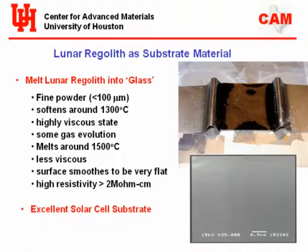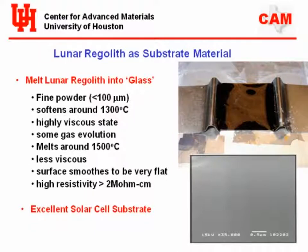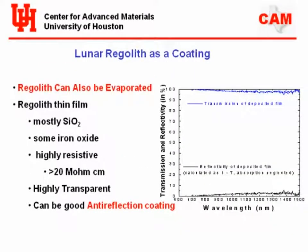We melted lunar regolith simulant JSC-1, and it turns out to be a very nice glass. It softens around 1300°C and melts at 1500°C, with low viscosity at those temperatures and high resistivity — two megaohm-centimeter. Under SEM there's just no structure; it's a very nice glass — an excellent substrate. When you evaporate the regolith, the film evaporates mostly as silicon dioxide, which turns out to be a very nice anti-reflection layer. So you can melt the regolith to grow the glass substrate and also use it to do the anti-reflection coating.